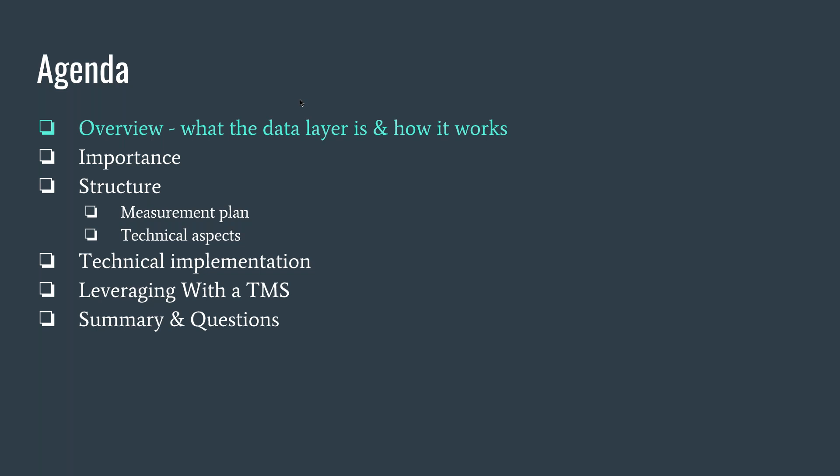To quickly run through the different items we'll be covering today: first, the overview — at a high level, what is the data layer, how does it work, what is the structure? Going through what the importance is, so why you should have one on your site yesterday. Going through the structure — what goes into actually architecting the data layer you're going to implement on your website, what is that measurement plan. And then the technical aspects of actually getting it into that object on the page, leveraging that data layer with your tag management system, and then any final questions and summary.